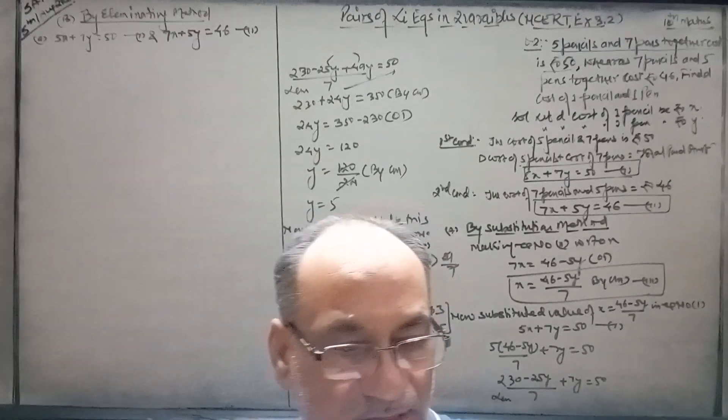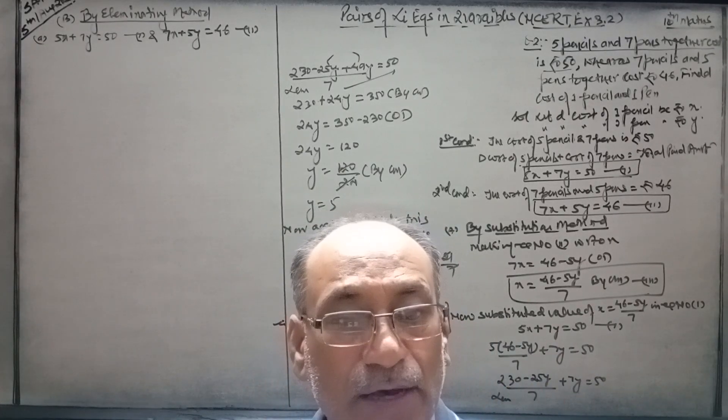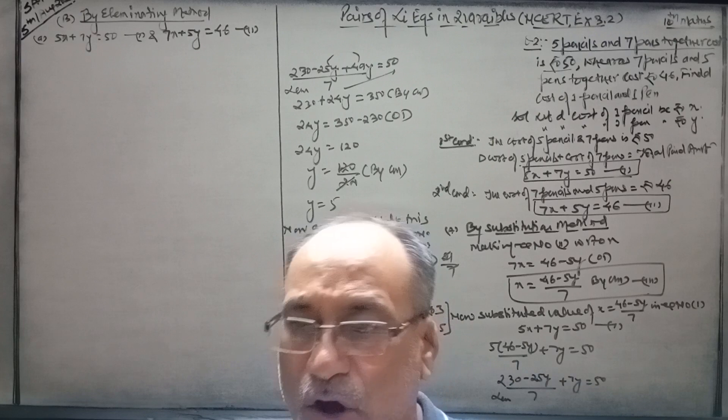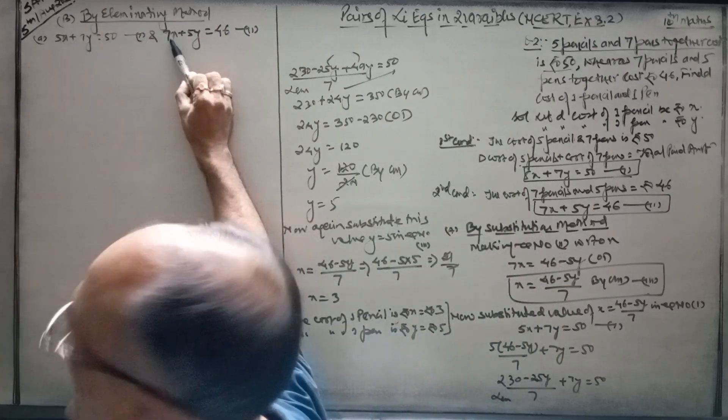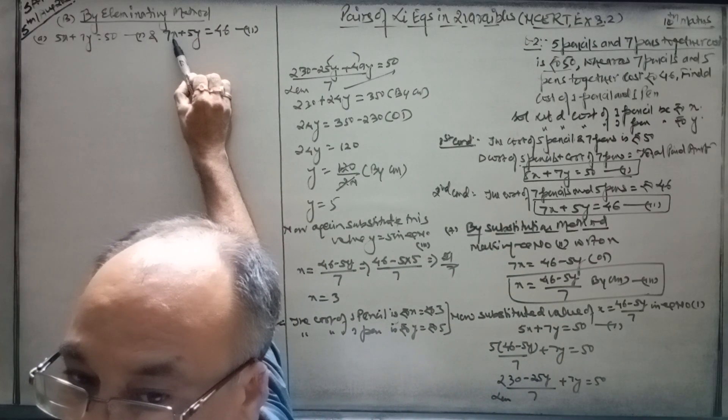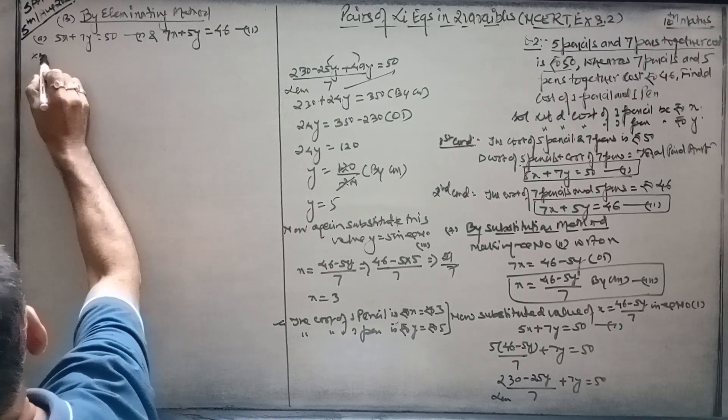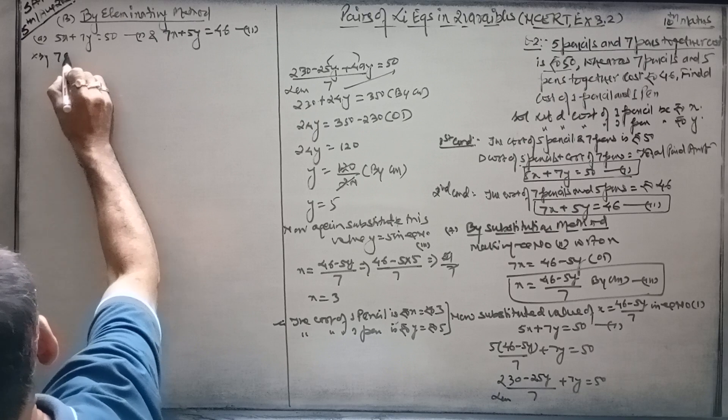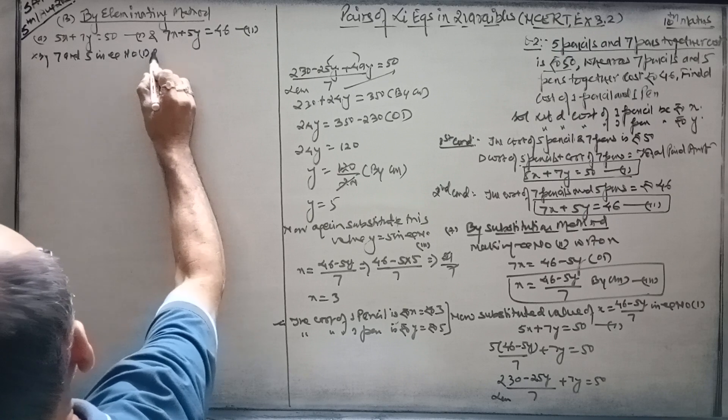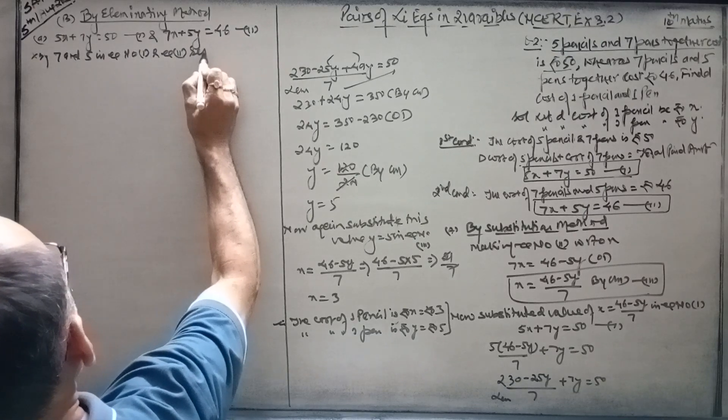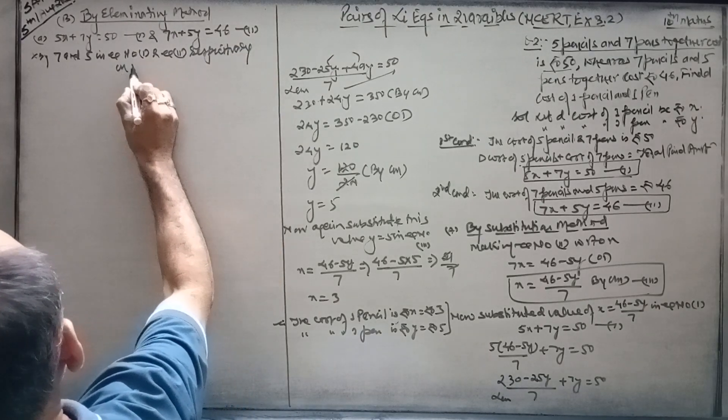What is the meaning of elimination? You have to make the coefficient of x equal in both equations, either x or y. That is up to you. So now multiply by 7 and 5 in equation number 1 and equation number 2 respectively on both sides.